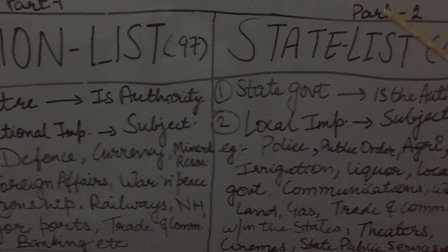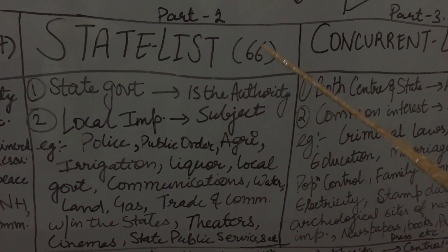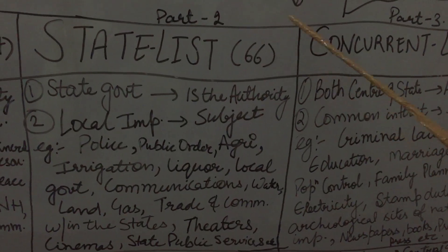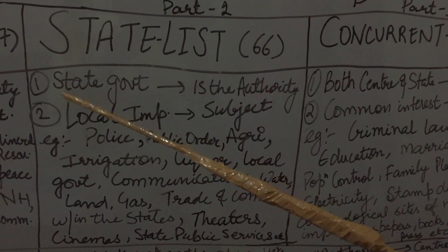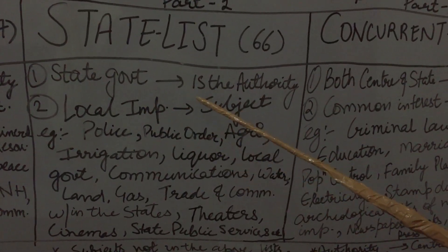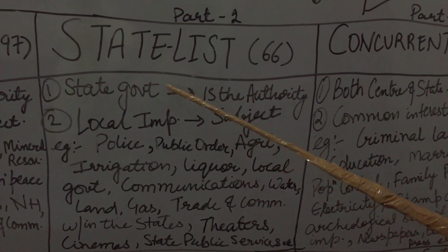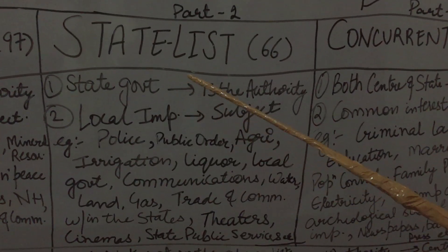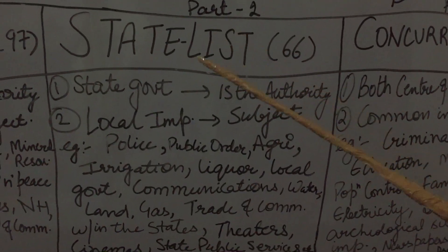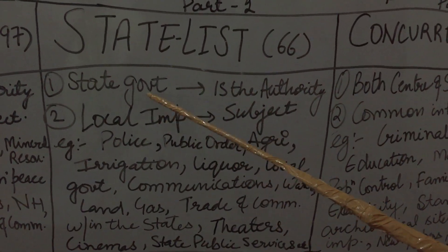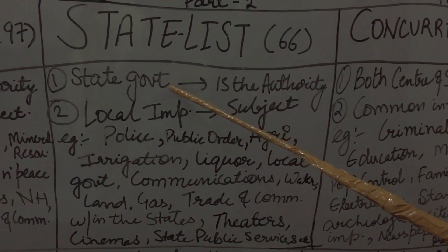Moving ahead to the second part of the seventh schedule, which is about the state list. Originally we had 66 subjects but now we have 61 subjects. State government has the authority here. Agar hum example se baat karein — Haryana ki baat karte hain — Haryana mein JJP and BJP ki government hai, toh dono milke chalayenge. Toh yahan state list mein rajyon ki sarkar chalegi, state government chalegi.